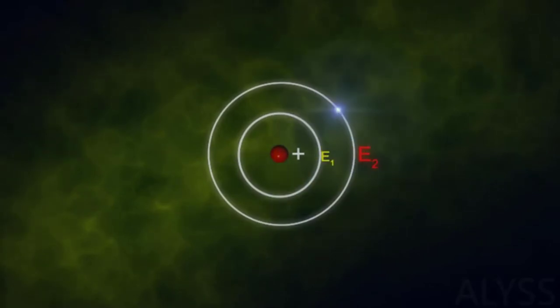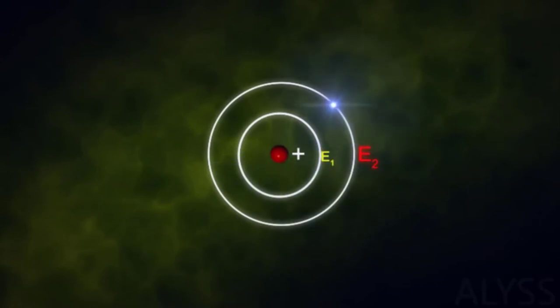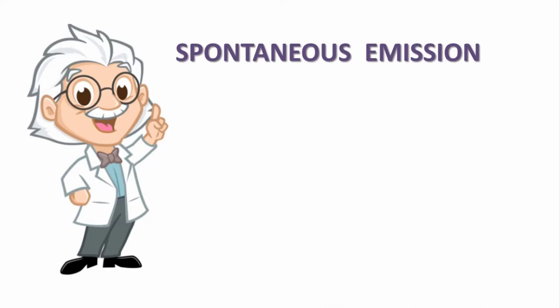However, the upper energy levels, just because they have high energy, are unstable. Therefore, the excited atoms will invariably de-excite and come to the ground state. During this process it will discard its extra energy as a photon. This process is called spontaneous emission. Why is it called spontaneous? Because it is a random process.